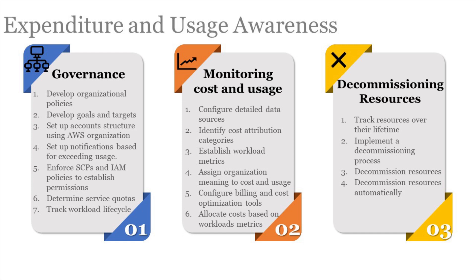Track Resources Over Their Lifetime: track resources by applying tags and maintaining an inventory using Systems Manager — for example, tagging all testing resources and monitoring their usage. Implement a Decommissioning Process: a standard process for scanning unused resources and timely decommissioning should be established. Decommission Resources: factors for motivation toward decommissioning include potential cost savings, efforts required, state change of workload, and change in market conditions or product termination. Decommission Resources Automatically: dynamic resources can be automatically terminated using auto-scaling and workload-specific scale-down policies. You can also use custom code and CloudWatch EventBridge to automatically trigger decommissioning of workload resources.